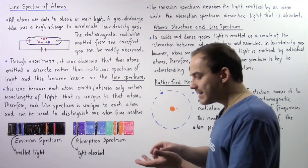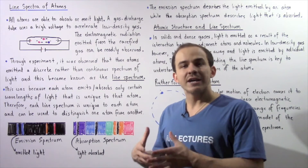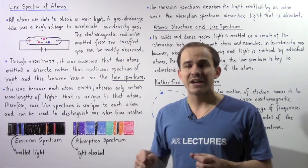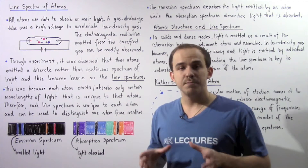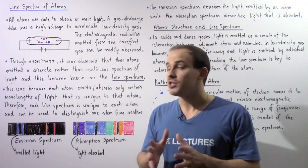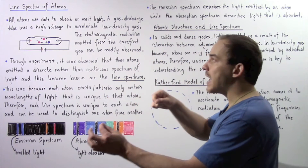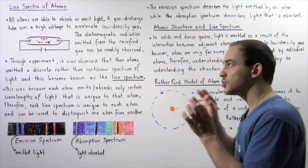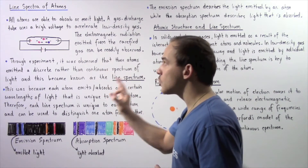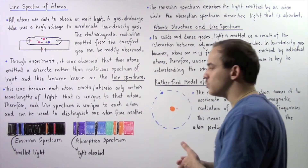Inside a solid, liquid, or very condensed gas, the electromagnetic radiation emitted produces a continuous spectrum of colors, because a wide range of wavelengths is produced. On the other hand, in a rarefied gas the atoms are found very far from one another and do not interact, so the line spectrum consists of discrete wavelengths, as shown in the following diagrams.